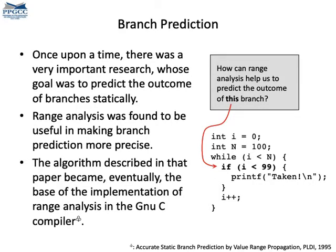Range analysis also helps to improve branch prediction. If we know the ranges of the variables used in conditionals, it might be easier to guess their values statically. This kind of branch prediction can be used to create static profilers — that is, estimates of the probabilities that each edge of the CFG is executed.